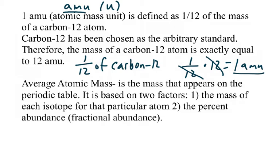Now we're going to learn how to calculate the average atomic mass, which is what appears on the periodic table. You'll notice it is a decimal, because it's an average of all the isotopes that exist for that particular element. There is an instrument called a mass spectrometer that provides us with the data we need. The two pieces of information required are the mass of each isotope and the percent abundance or fractional abundance — the percentage of that isotope found in nature.